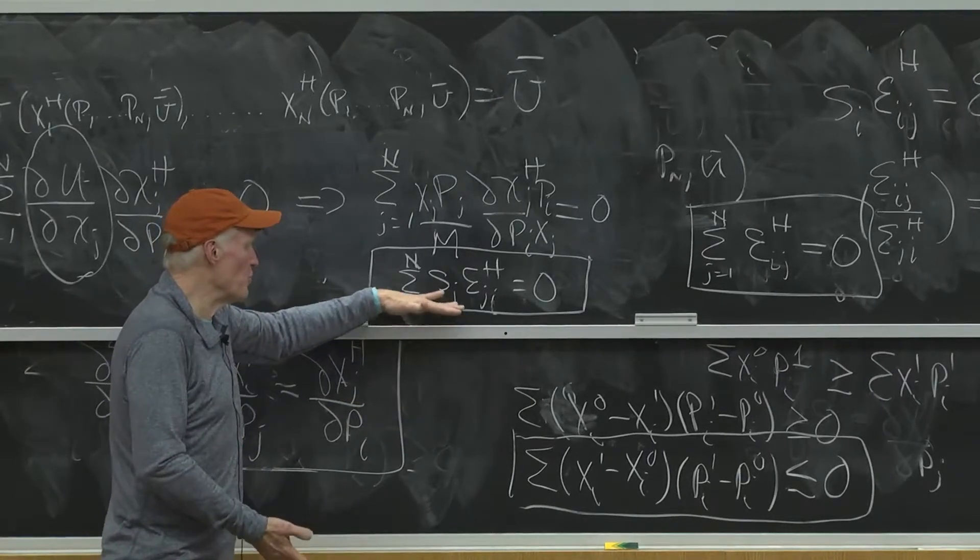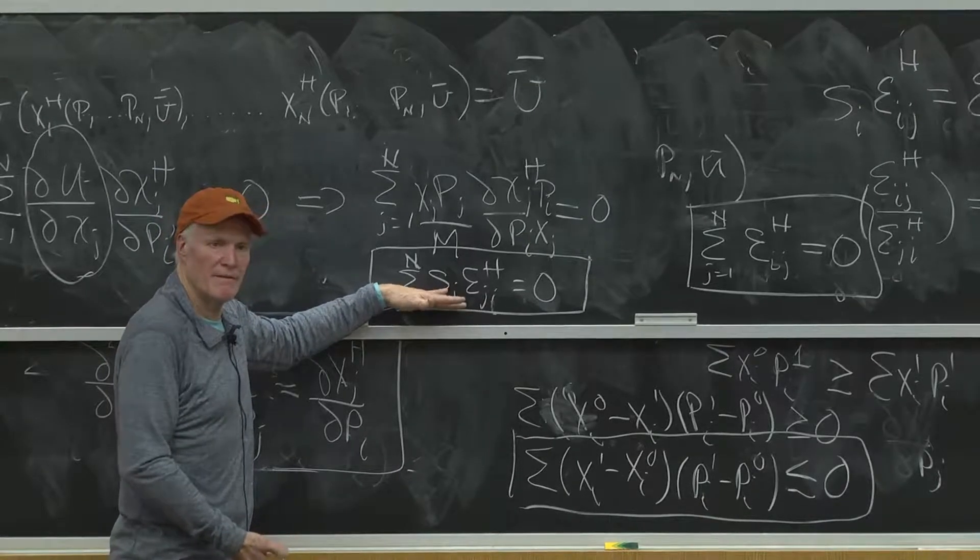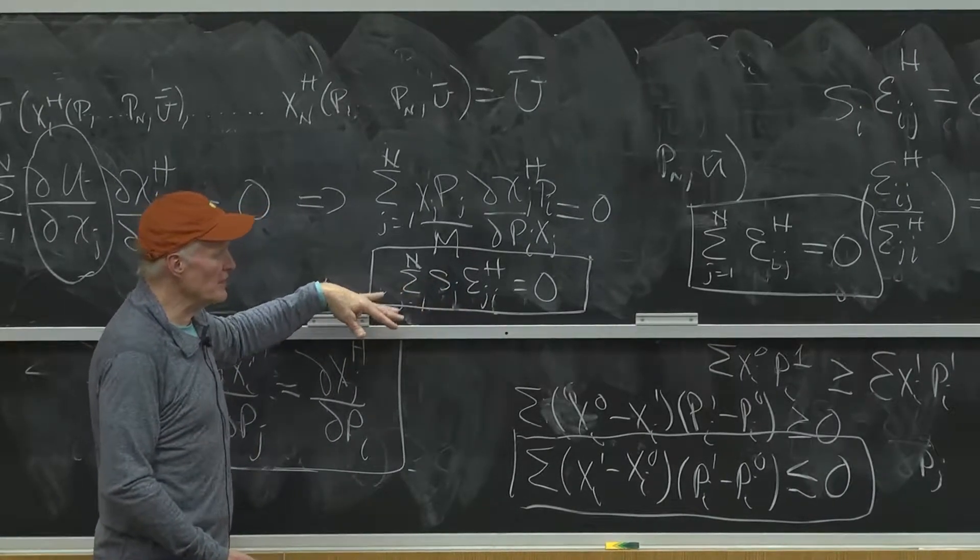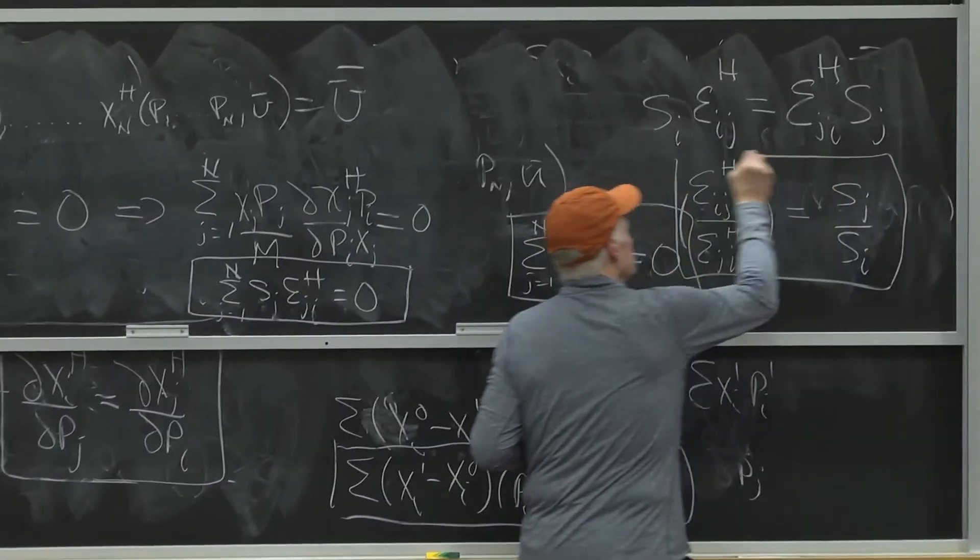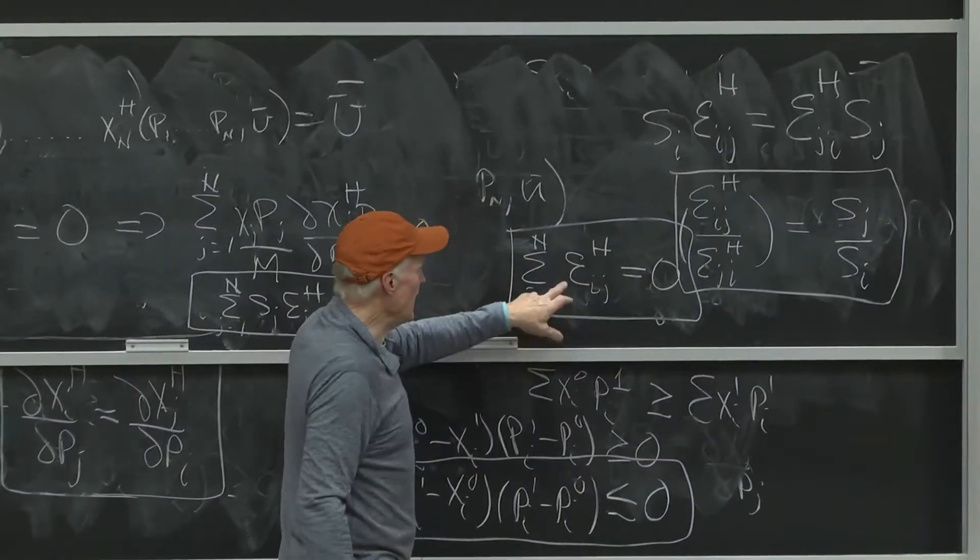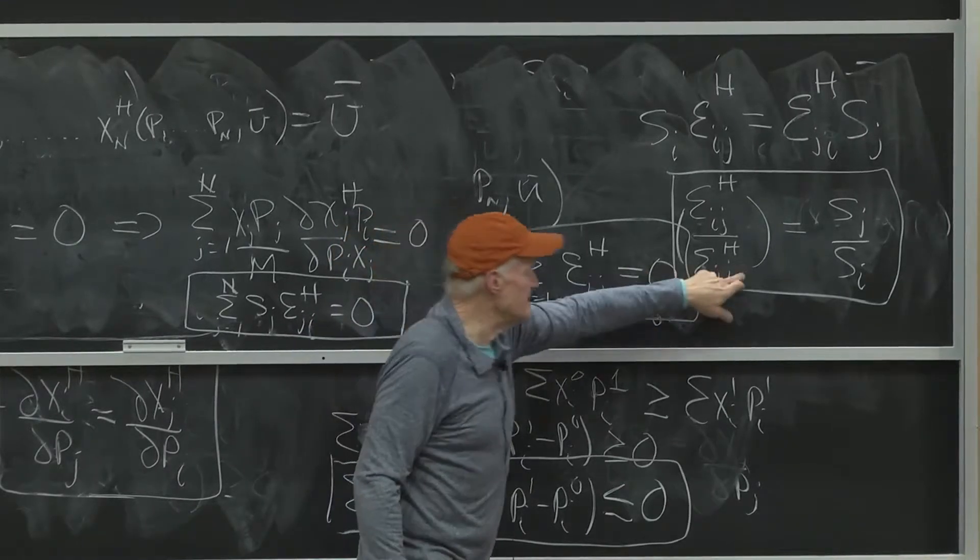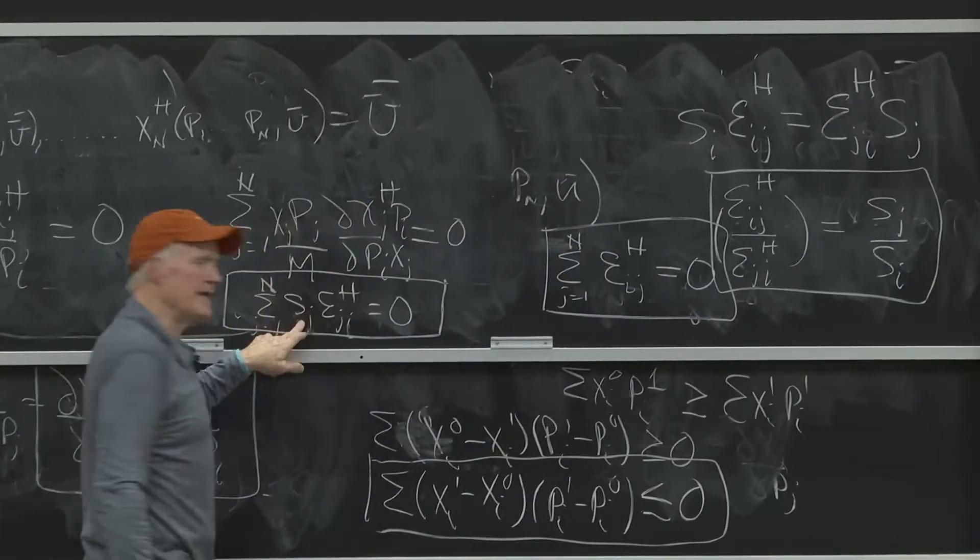But that's just what is required to hold utility constant. So I really have three restrictions that come out: homogeneity, symmetry, and adding up.